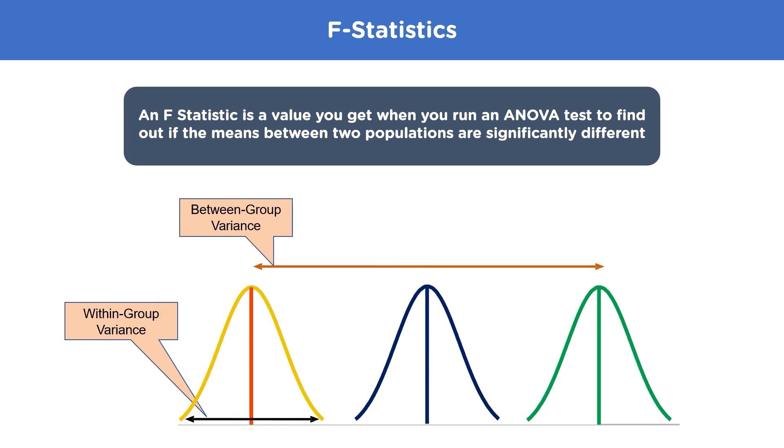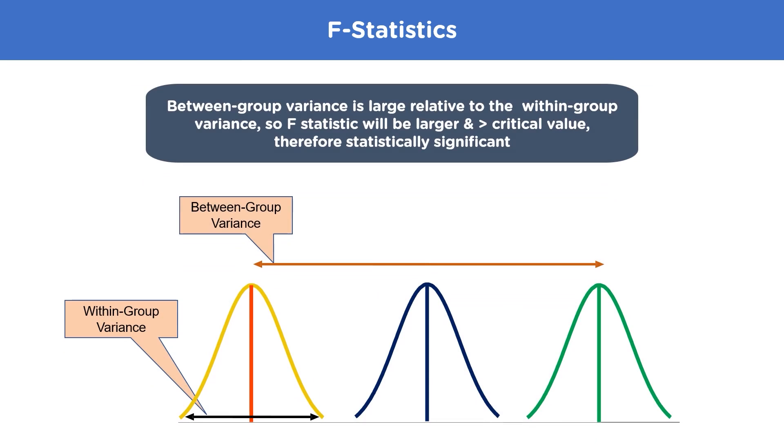If you have three different data sets, then this part will be the within-group variance, that is, the variance between the samples. This line will be the variance between the means of the different samples, which is also called between-group variance. If the between-group variance is large relative to the within-group variance, the F-statistics will be comparatively large to the critical value and therefore will be statistically significant.